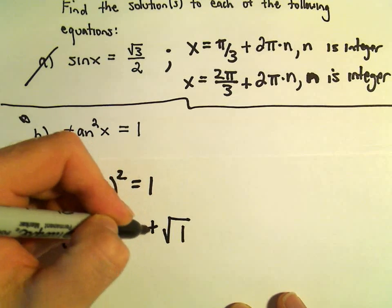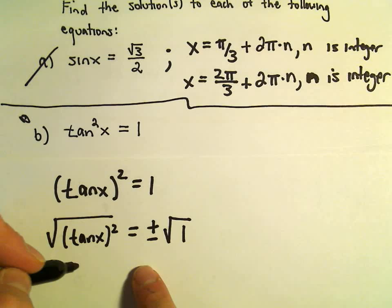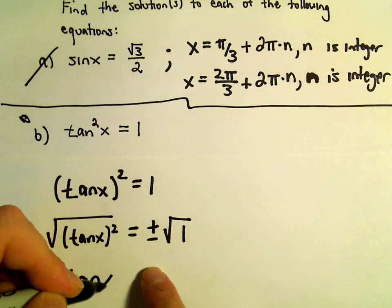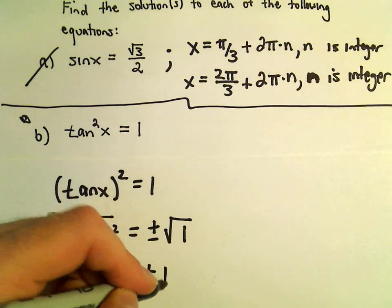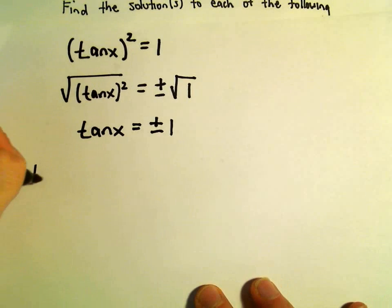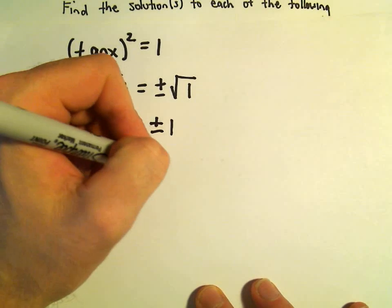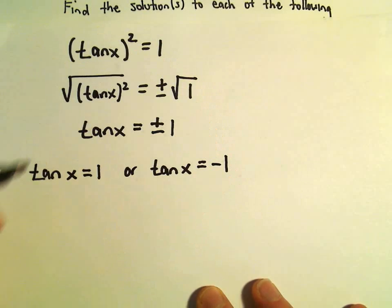We have to put a positive and a negative on one side or the other. So the square root of tangent squared, we'll just write tangent x equals positive or negative 1. So now we have to figure out all places where tangent x either equals positive 1 or where tangent of x equals negative 1.